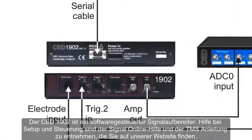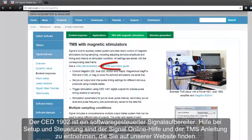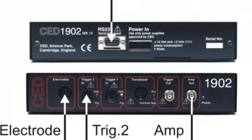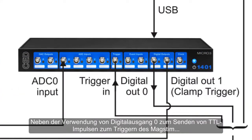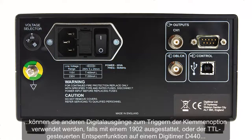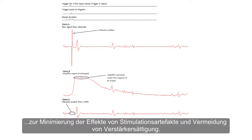The CED1902 is a software-controlled signal conditioner; help with setup and control can be found in the Signal online help and in the TMS application guide downloadable from our website. Signal also has software support for Digitimer D440 and D360 amplifiers. In addition to using digital output 0 to send TTL pulses to trigger the MagStim, the other digital outputs can be used for triggering the clamp option if fitted to a 1902, or the TTL gated D-block function on a Digitimer D440 for minimising the effects of stimulation artifacts and preventing amplifier saturation.